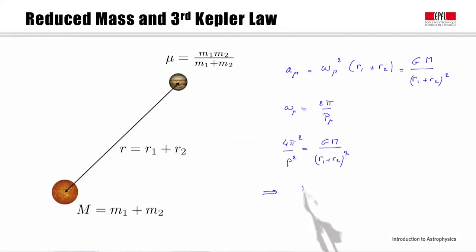I therefore get 4pi squared divided by P squared equals GM divided by (r1 + r2) cubed. In other words, P squared divided by (r1 + r2) cubed equals 4pi squared divided by GM. This is the distance r.